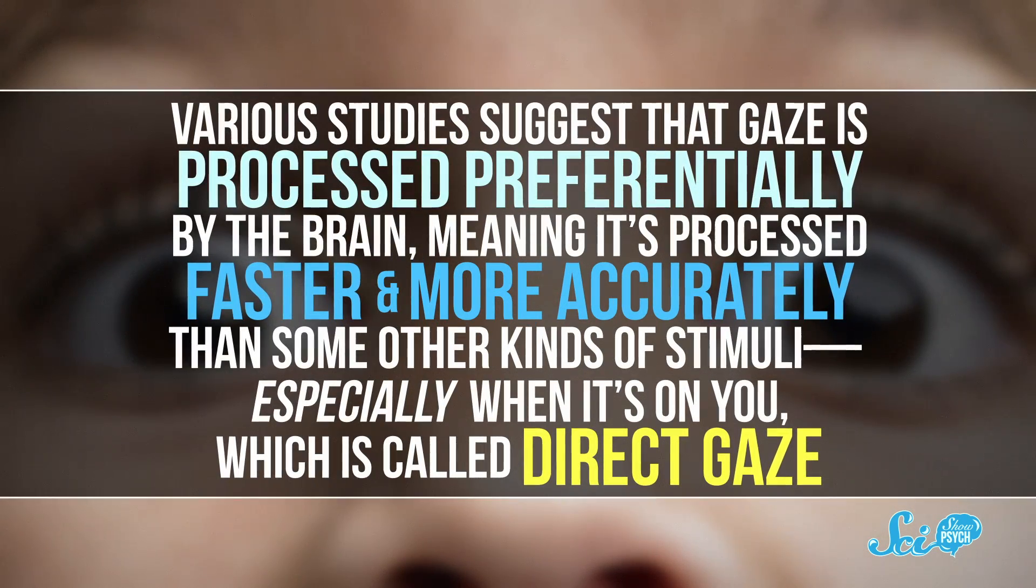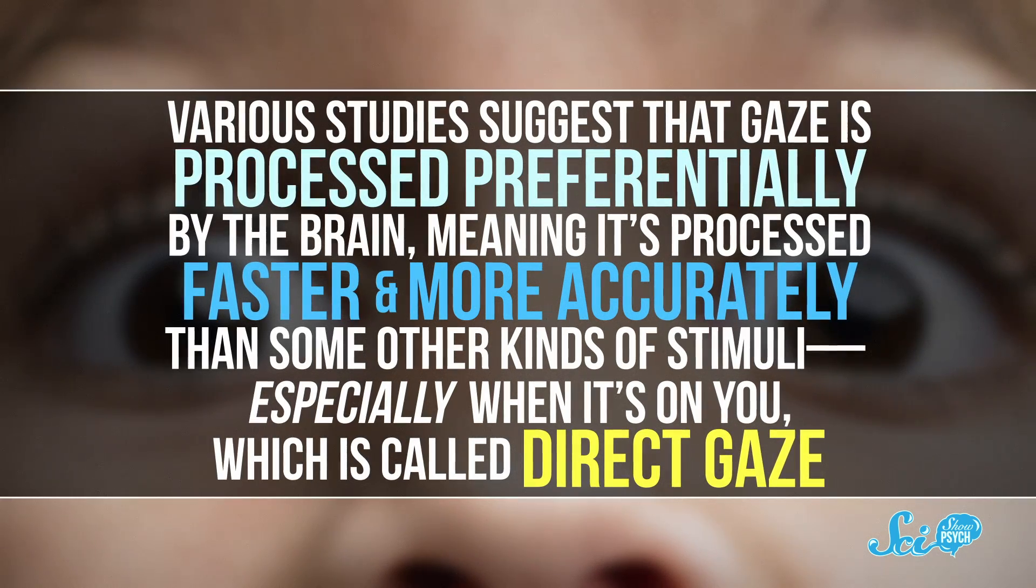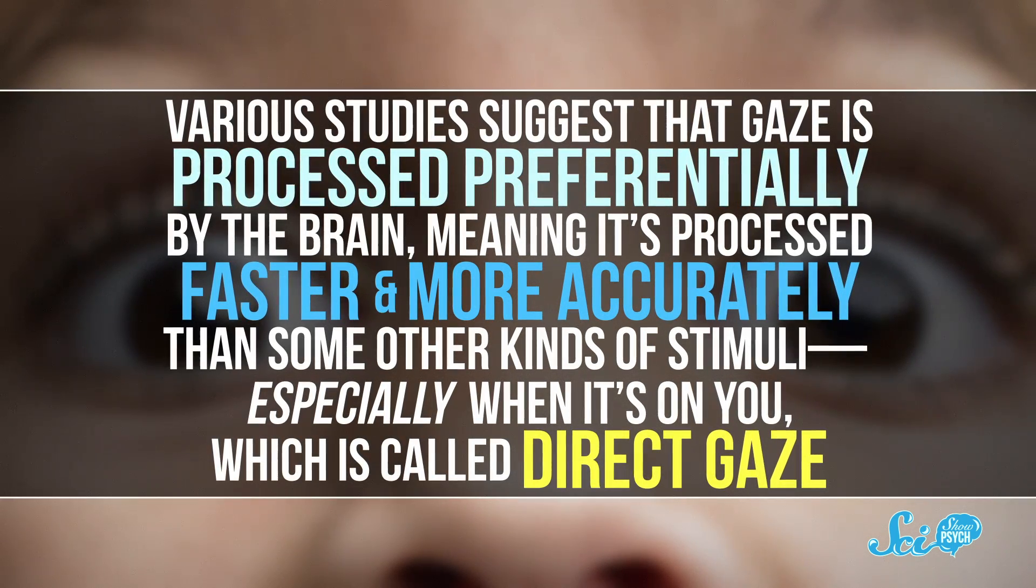And even though we don't have all the answers about how it works in humans, science has provided some pretty good evidence as to what's going on in your brain. Various studies suggest that gaze is processed preferentially by the brain, meaning it's processed faster and more accurately than some other kinds of stimuli.